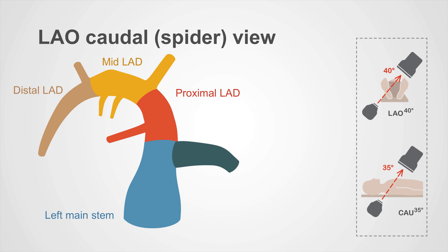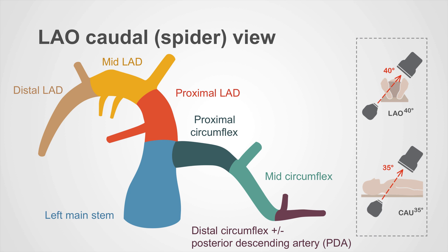The proximal circumflex artery again comes off the left main stem, as discussed earlier, and the circumflex tends to head to the right-hand side of the screen in the LAO caudal or spider view. Here you can see the proximal circumflex becoming the mid-circumflex, and then the distal circumflex, and again the posterior descending artery if this is a left-dominant system.